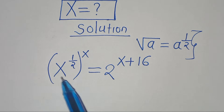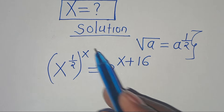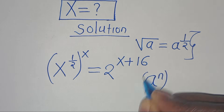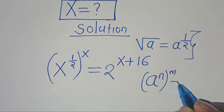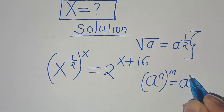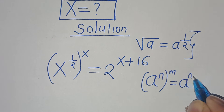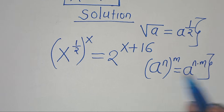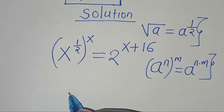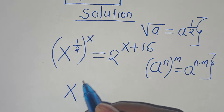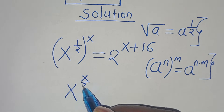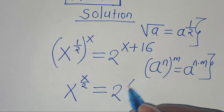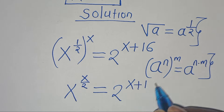The next step is that x to the power of half raised to the power of x is in the form of a to the power of n, raised to the power of m, which we can express as a to the power of n multiplied by m. Applying this exponent property, we have x to the power of x over 2, this is equal to 2 to the power of x plus 16.